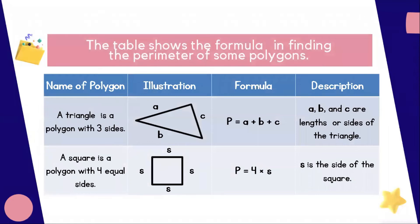Furthermore, the table shows the formula in finding the perimeter of some polygons. We have the triangle with 3 sides. The formula is A plus B plus C, where A, B, and C are lengths or sides of the triangle. The second one is a square, which is a polygon with 4 equal sides. Its formula is 4 times S, where S is the side of the square.